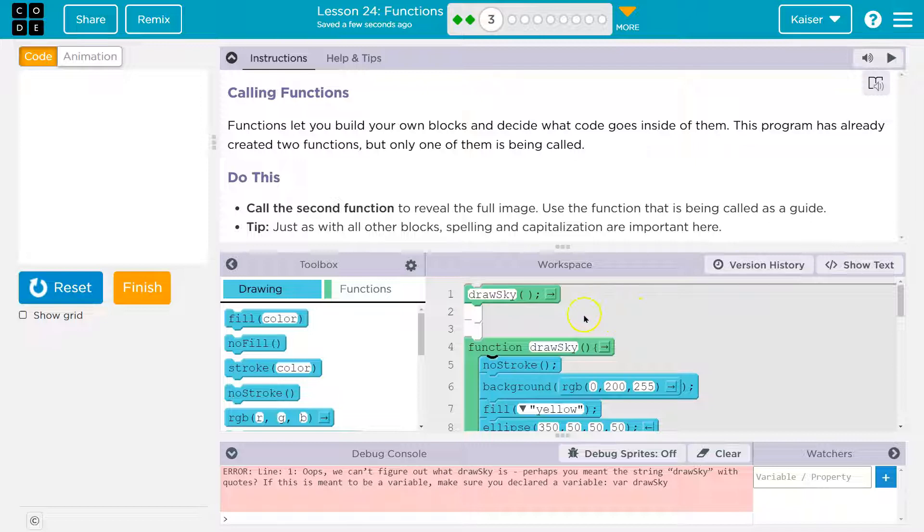We have to say its name, and so if we say its name, like right here, the draw sky function runs.